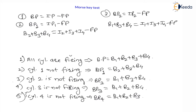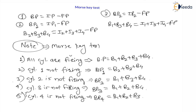These calculations we will see with the help of a simple numerical. Remember one important note: the Morse Key Test is applicable only for a multi-cylinder engine — at least 2 cylinders are required to apply this test. Let us understand this test with a simple numerical example.